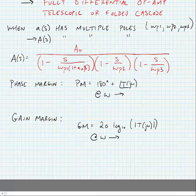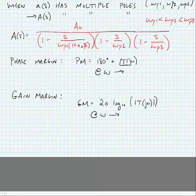Here we have a transfer function that has three poles in it. It has a dominant pole at omega p1 times (1 plus a0 times beta), and then two higher frequency poles. We're saying that omega p1 is less than omega p2, which is less than omega p3. We can estimate the phase margin for our op amp in negative feedback by summing 180 degrees with the angle of the loop gain at omega where T(jω) equals 1. This is the point where we have potential for instability.